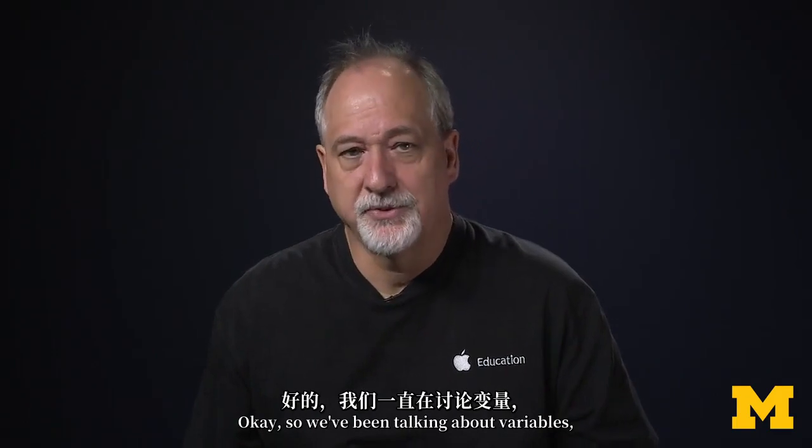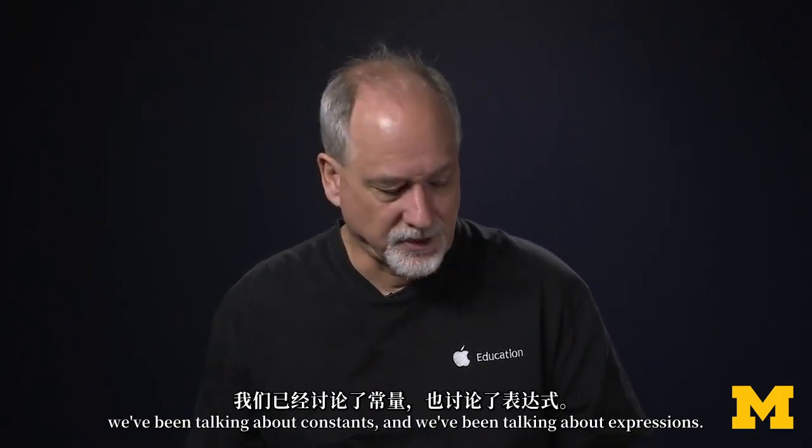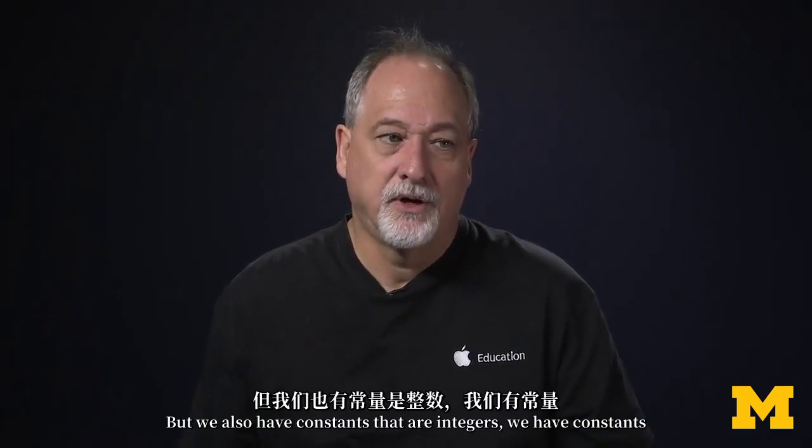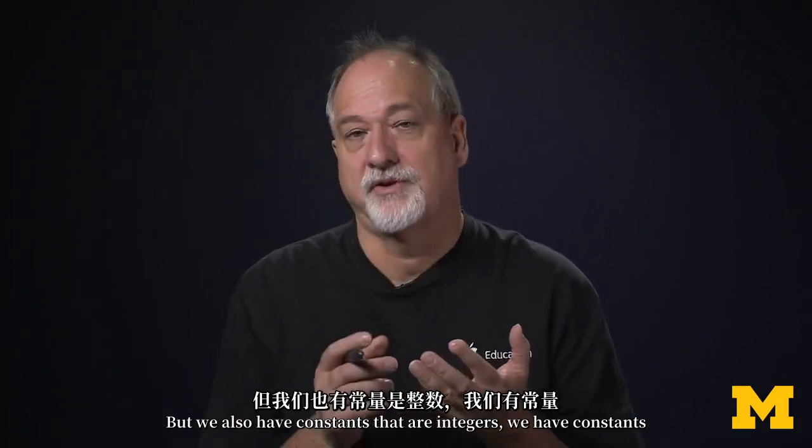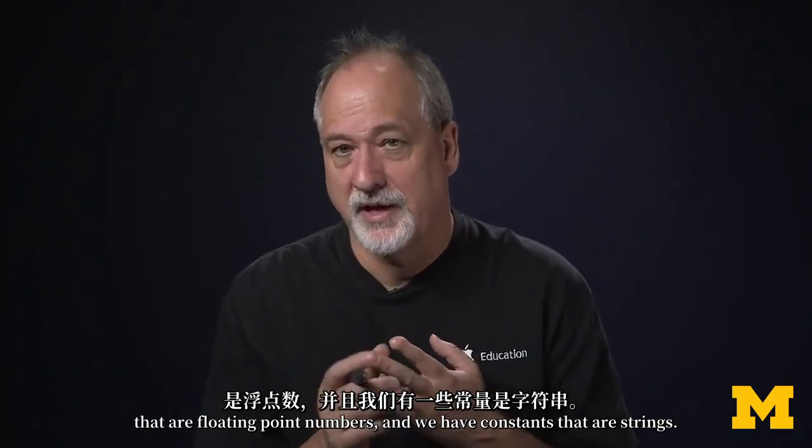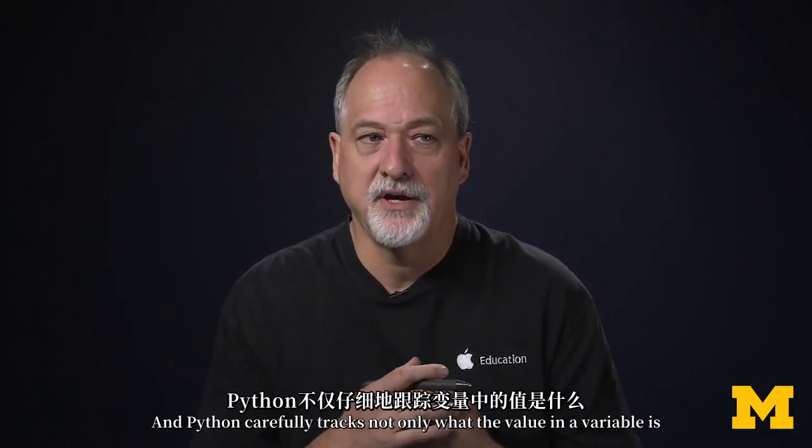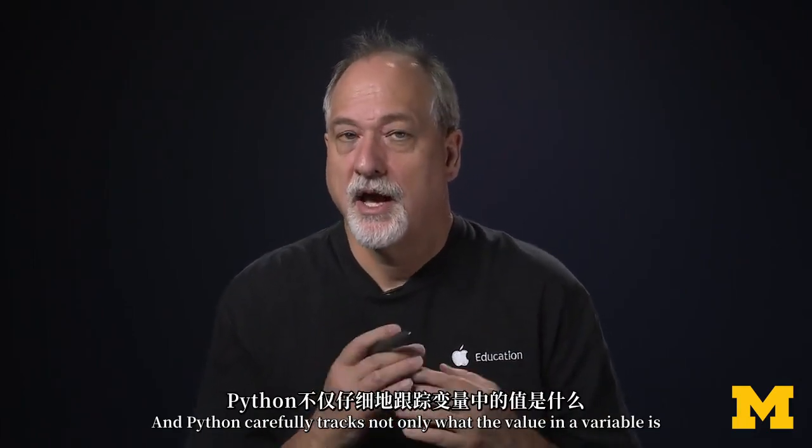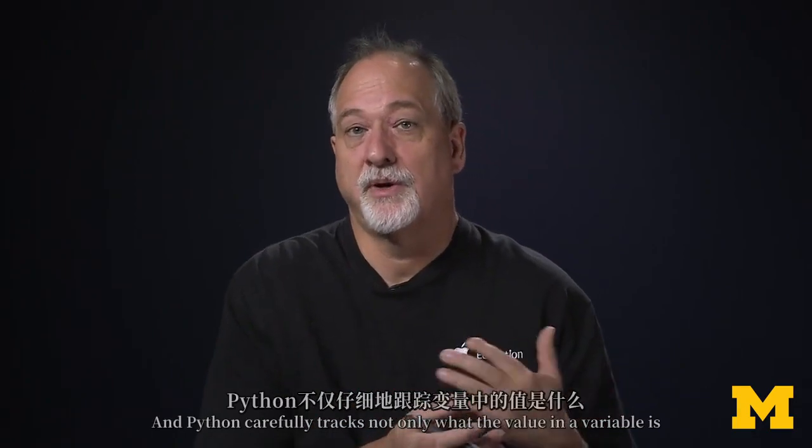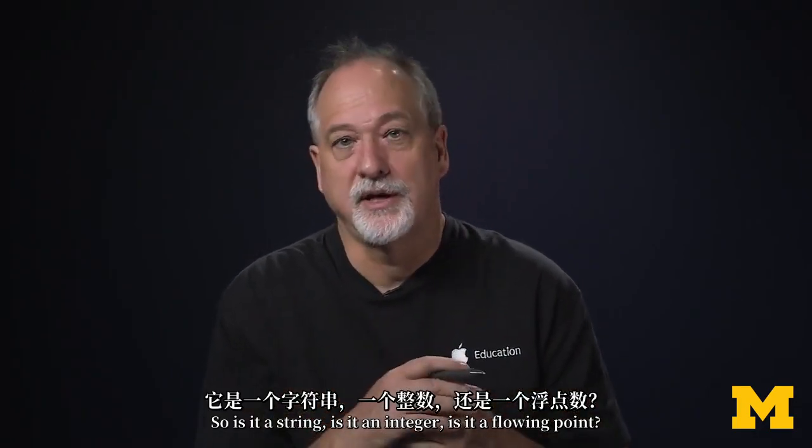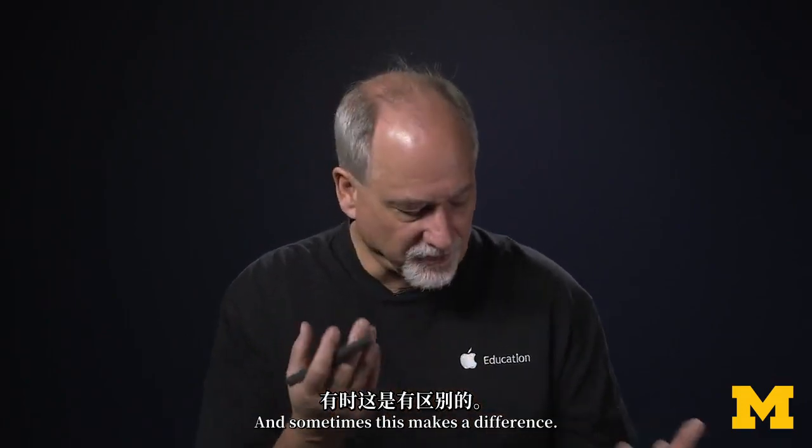So we've been talking about variables, we've been talking about constants, and we've been talking about expressions. But we also have constants that are integers, we have constants that are floating point numbers, and we have constants that are strings. And we can manipulate these. And Python carefully tracks not only what the value in a variable is, but what kind of a value it is. So is it a string, is it an integer, is it a floating point? And sometimes this makes a difference.